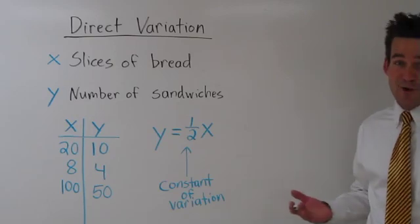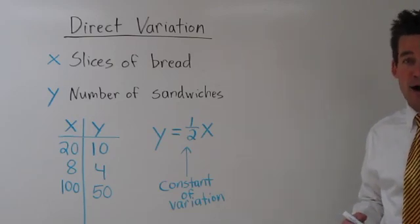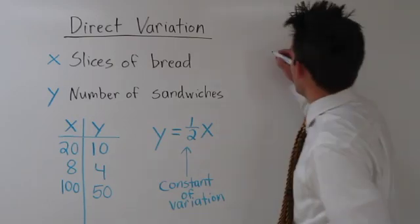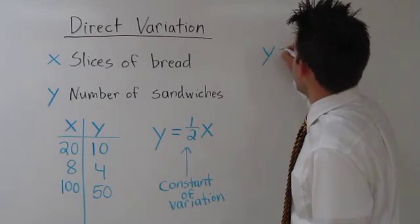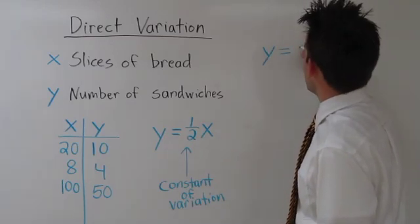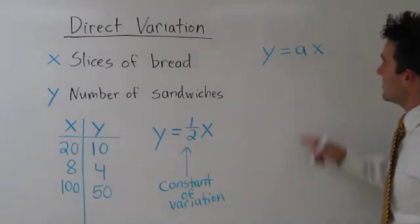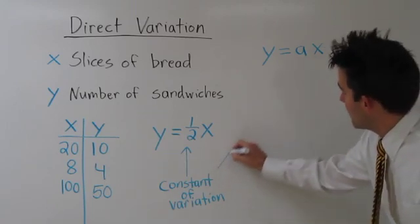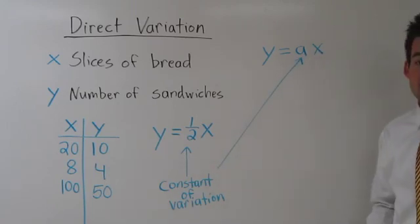In general, direct variation can be modeled with the following formula: y equals a times x, where a is the constant of variation.